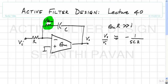With a folded cascode, the output swing can go two delta-Vs from the supply on either side, giving a large swing in principle. However, to get a sufficiently high GM, the only way is to burn more and more current in the differential pair.